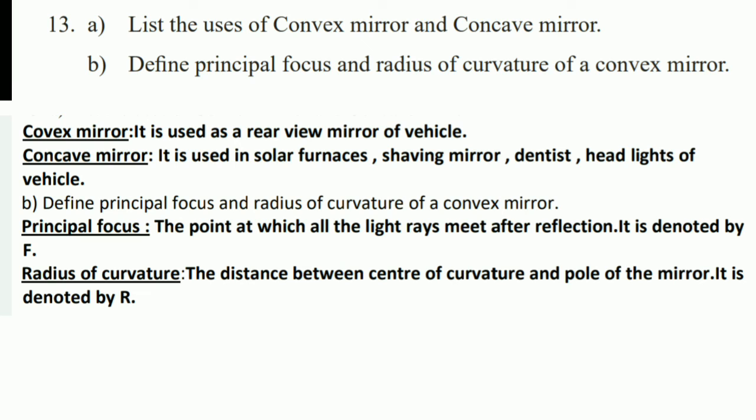Next question: list the uses of convex mirror and concave mirror, and define principal focus and radius of curvature of a convex mirror. Convex mirror is used as a rear-view mirror in vehicles. Concave mirror is used in solar furnaces, shaving mirrors, dentist mirrors, and headlights. The principal focus is the point at which all light rays meet after reflection, denoted by F. The radius of curvature is the distance between the center of curvature and the pole of the mirror, denoted by R. These are the answers for the physics questions in model paper 21 and 22.